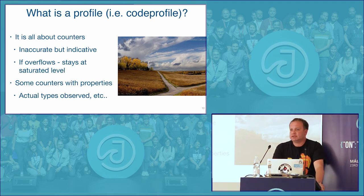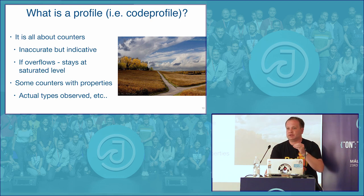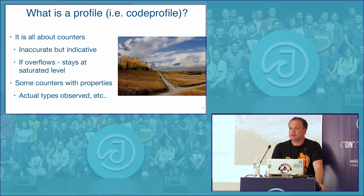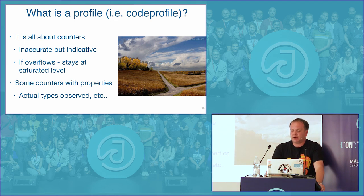For example, if you have a method that takes an interface as a parameter, when you actually call it you pass an object of some class implementing that interface. The code profile captures which classes have been passed to that method so it can optimize for those classes specifically. In most cases you only see two or three classes being used in that method, and we can optimize for those particular cases without doing the expensive virtual call logic. Some counters capture which Java types are being observed.